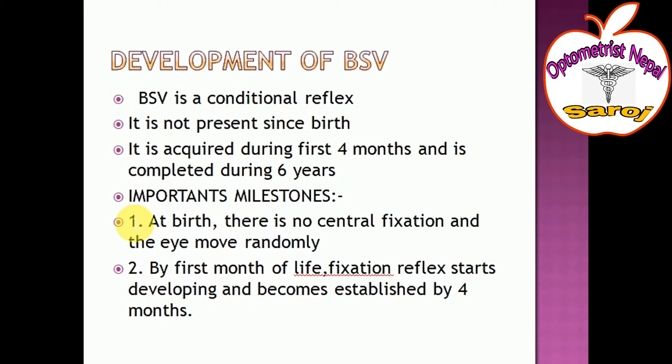At birth, there is no central fixation. Babies at birth have no central fixation, so their eyes move randomly — left, right, up, down — because there is no central fixation. By the first month of life, the central fixation reflex starts developing and becomes established by six months.